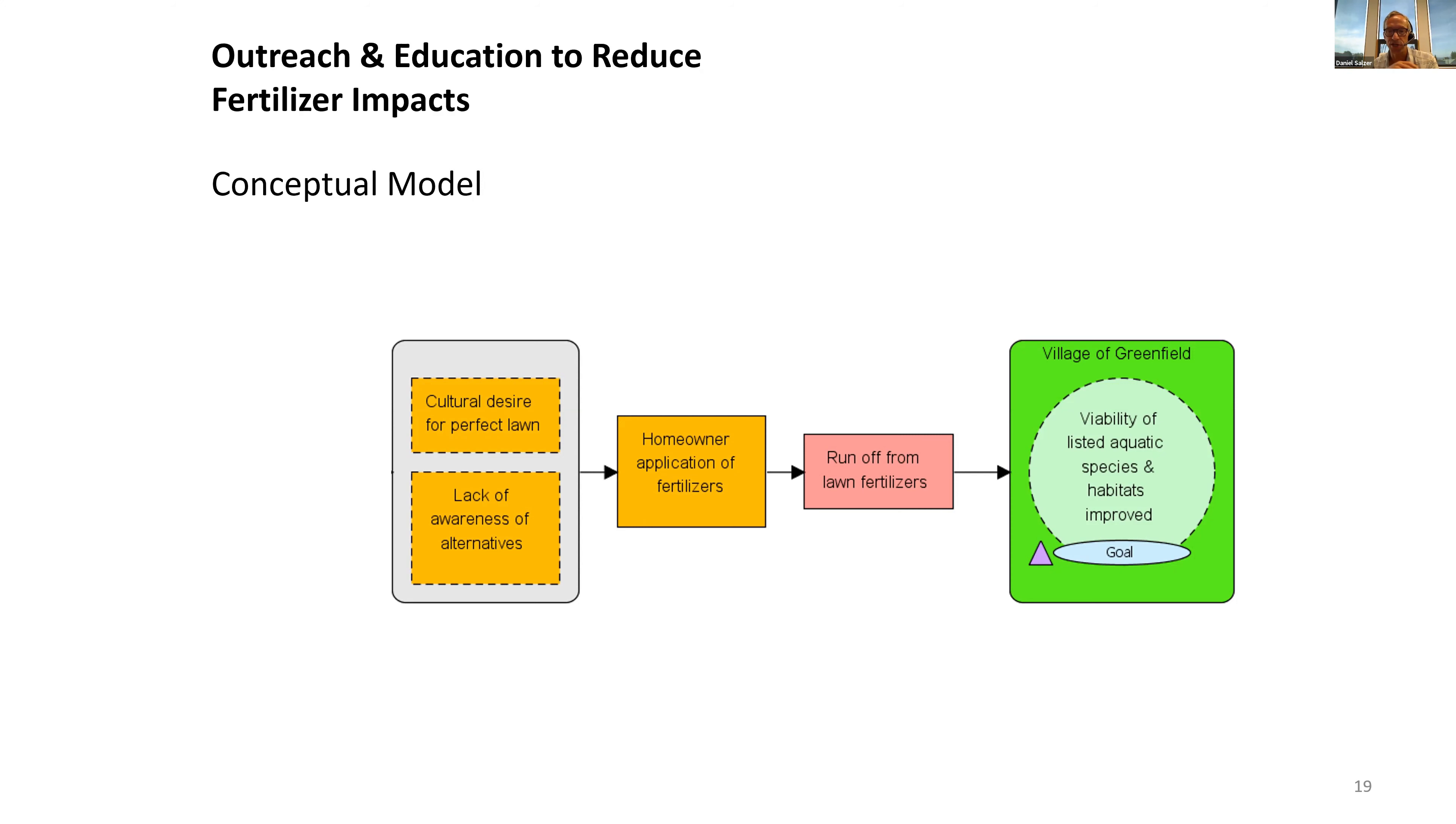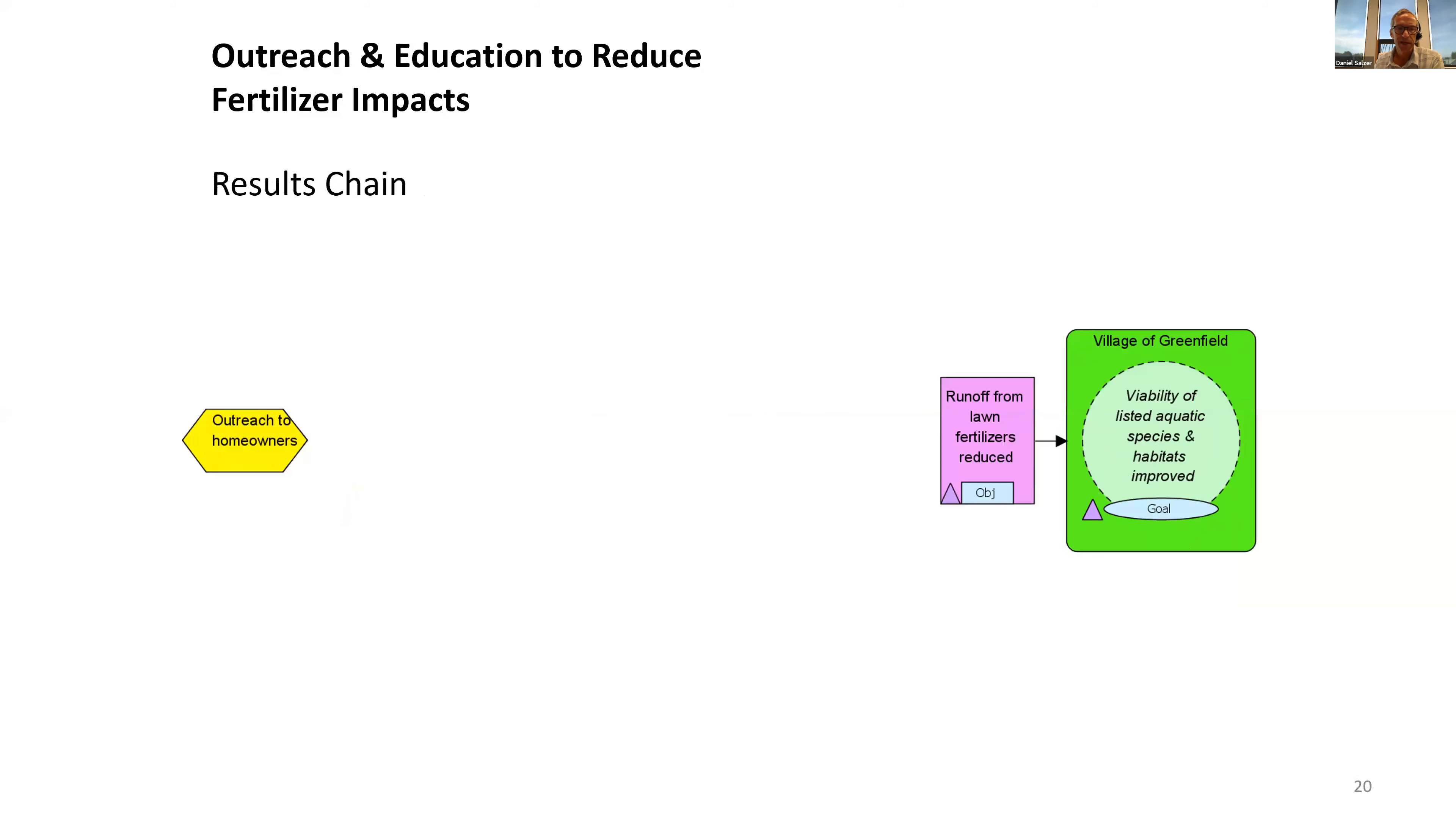It's driven by the desire for the perfect lawn and lack of awareness of alternatives. These really set up the stage for picking strategies. In this case, an outreach strategy to the homeowners. You can take that same information and convert it into a results chain diagram.